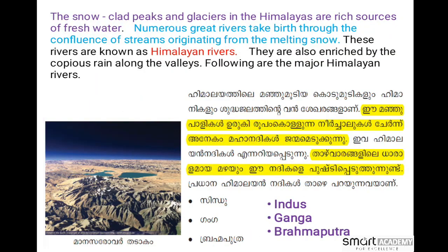The snow-clad peaks and glaciers in the Himalayas are rich sources of water. Numerous great rivers take birth from the confluence of streams originating from the melting snow. These rivers are known as Himalayan rivers. They are also enriched by the rains along the valley. The following are the major Himalayan rivers.